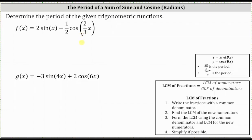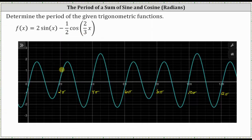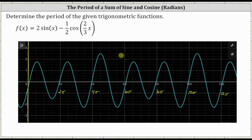Let's begin by analyzing the graph to determine the period of f of x. Let's start at the y-axis where x equals zero and work our way to the right to see if we can determine when the graph starts to repeat itself. If we focus on the maximums moving to the right, we have a relative max, a relative max, an absolute max, then the pattern starts to repeat.